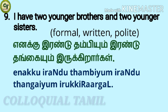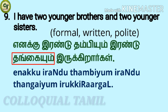To say 'I have 2 younger brothers and 2 younger sisters' — 'Ena kku Irenda Thambayyum Irenda Thambayyum Irikkira Arghal.' This is in formal form, which is also the written form and the polite form. For 'Thambayyum,' add the short vowel U and consonant M at the end of Thambay: Thambayyum. The colloquial form is 'Ena kku Irenda Thambayyum Irenda Thambayyum Irikkaang.'